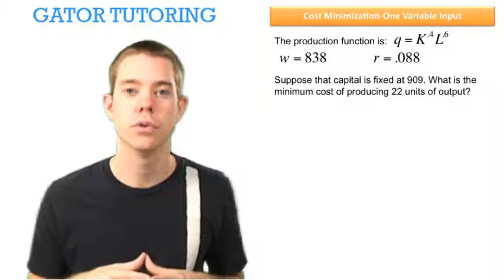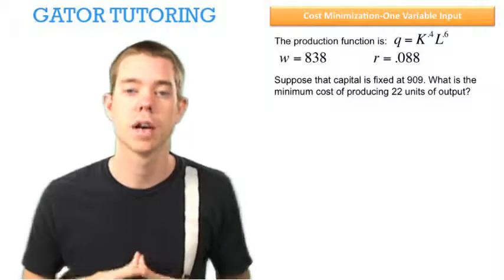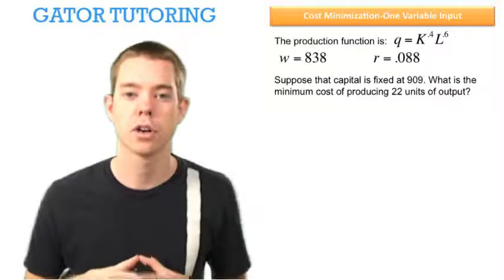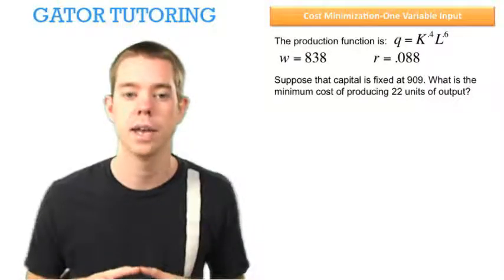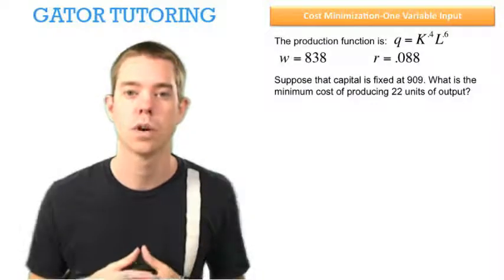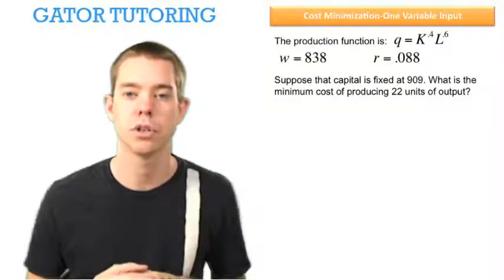The production function is Q equals K to the 0.4 times L to the 0.6. The wage rate is 838 and the cost of capital is 0.088. Suppose that capital is fixed at 909. What is the minimum cost of producing 22 units of output?